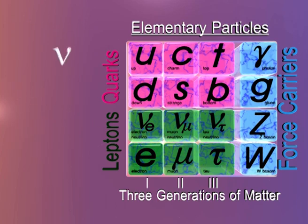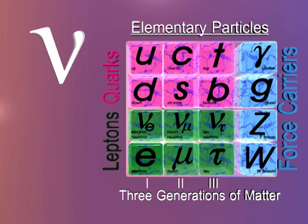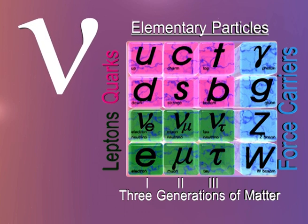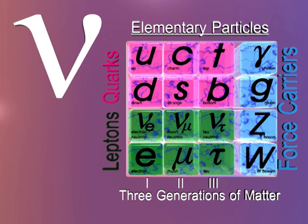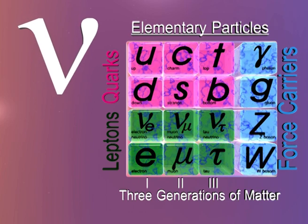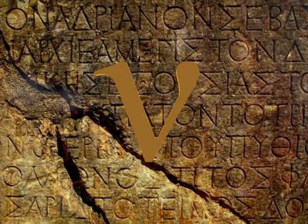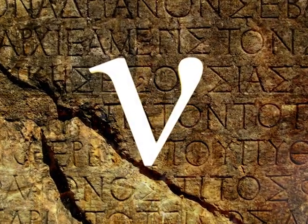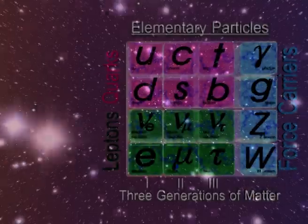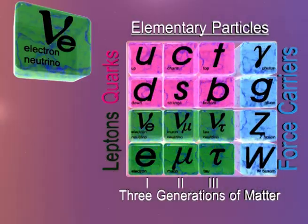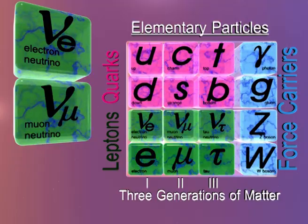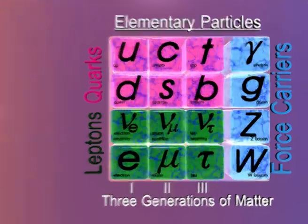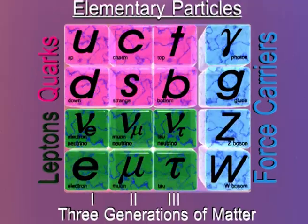The two cousins of the electron are the muon and the tau. Like the electron, neutrinos too are elementary particles. But unlike the electron which has a negative charge, a neutrino is chargeless or neutral. Neutrinos are denoted by the Greek letter nu. They come in three flavors: the electron neutrino, muon neutrino and tau neutrino. This fact is of significance and we shall go into depth later on.